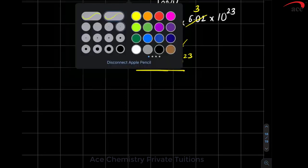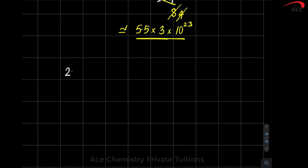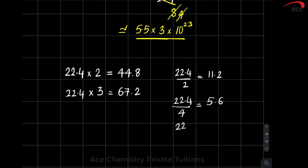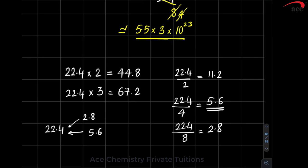For faster calculations, remember multiples of 22.4: doubling gives 44.8, tripling gives 67.2. Dividing by 2 gives 11.2, by 4 gives 5.6, and 2.8 is 22.4 divided by 8. Recognizing that 2.8 is a multiple of 22.4 helps solve numericals quickly.